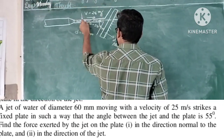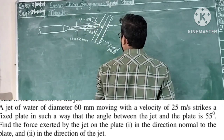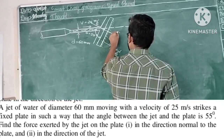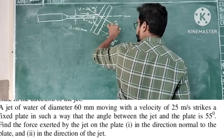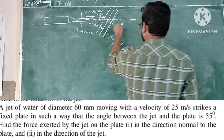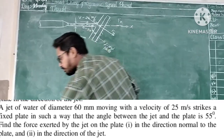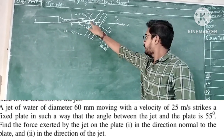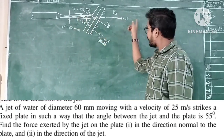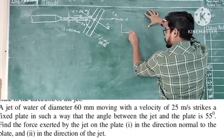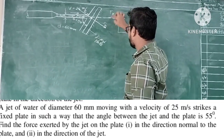We need to find Fn, the force exerted by the jet in the direction normal (perpendicular) to the plane, and Fx, the force exerted by the jet in the direction of the jet, which is the X direction. So our two unknowns are Fn and Fx.